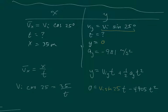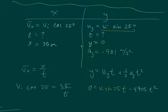I'm demonstrating substitution so you can see that two variables missing is manageable as long as it's the same two variables in both equations. Solving the X equation for vi — dividing cosine 25 to the denominator — gives vi equals x over T cosine 25. That expression gets substituted in for vi in the Y equation. I'll solve this method for vi and plug it in, which eliminates vi and leaves only T. Then once we know T, we plug back into the X equation to find vi.